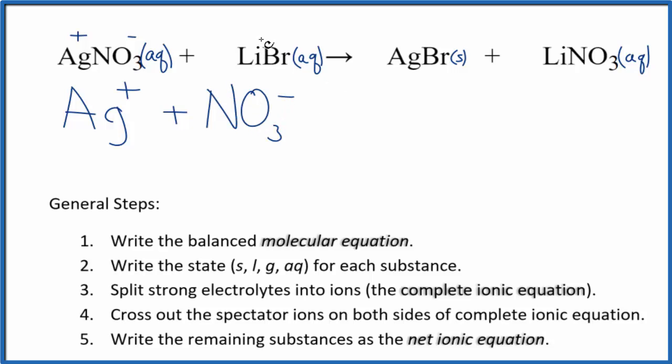Lithium's in group 1 on the periodic table, so 1+, and bromine is 1-. We have the lithium ion Li+ and the bromide ion Br-. These are the reactants in our complete ionic equation.